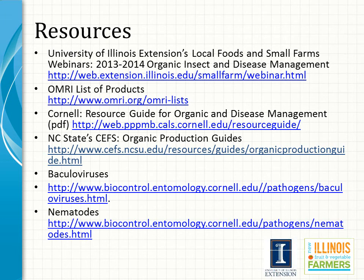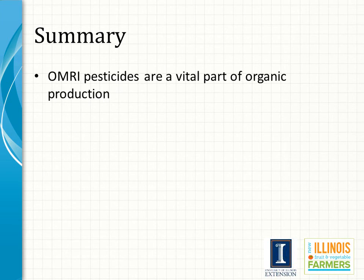Here are some additional resources that you may find useful. The Local Foods and Small Farms team has developed webinars that can be accessed at their address. There are two different webinars that address organic management of insects and disease. If you are interested in what other OMRI listed products are available, you can find them at the OMRI website link. Cornell also has some great resources on organic disease management, as well as North Carolina State's Center for Environmental Farming Systems. Additional information for insect viruses and nematodes can both be found at those addresses as well.